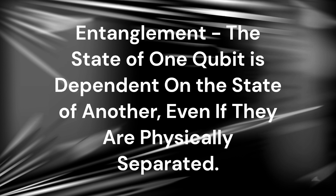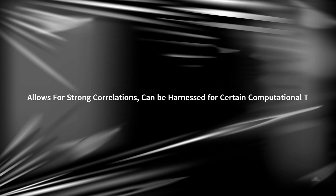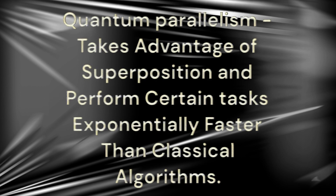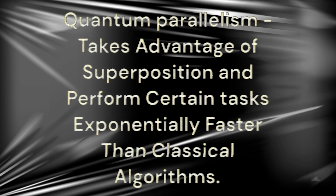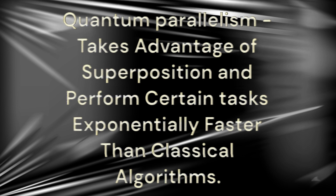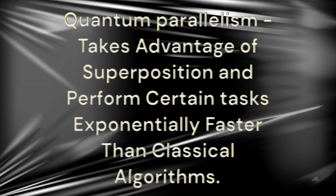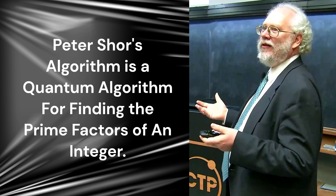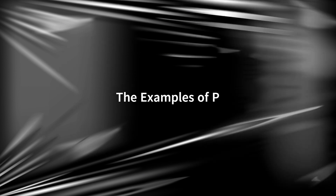Entanglement: qubits can become entangled, where the state of one qubit is dependent on the state of another even if they are physically separated. This allows for strong correlations and can be harnessed for certain computational tasks. Quantum parallelism allows quantum algorithms to take advantage of superposition and perform certain tasks exponentially faster than classical algorithms.